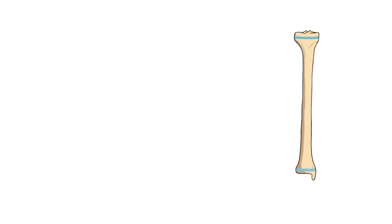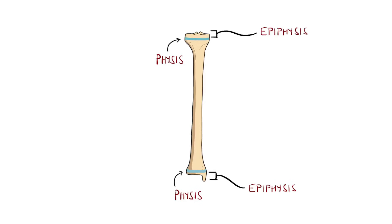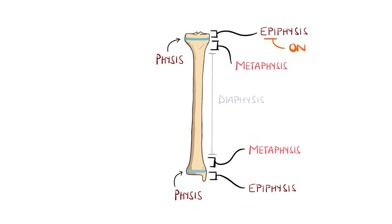Knowing the names associated is key, so here's a recap. Long bones will usually have two growth plates, also known as the physis. The epiphysis is the section on the end of the bone, remembered by 'epi', meaning on. The metaphysis is the part between the physis and diaphysis, remembered by 'meta', meaning between or next after the growth plate.